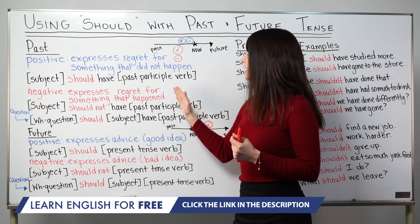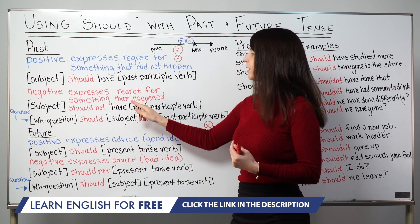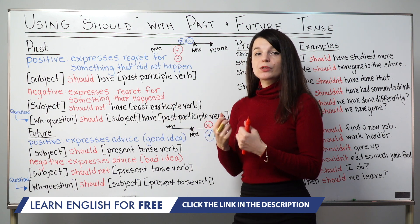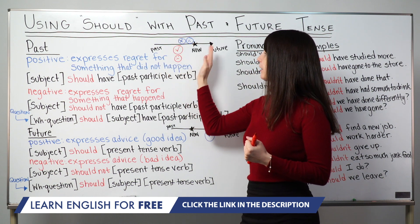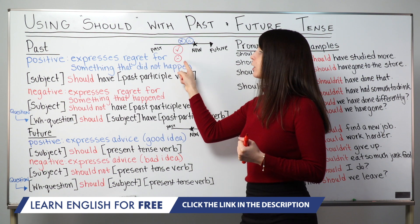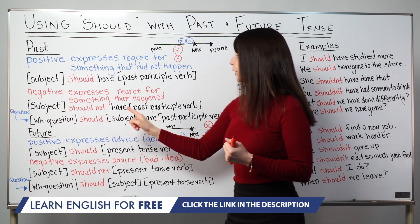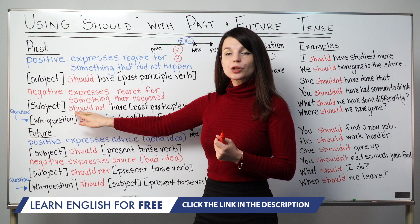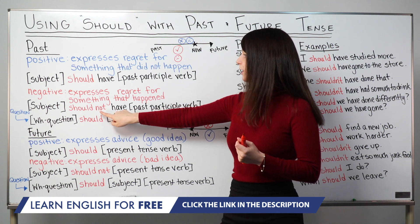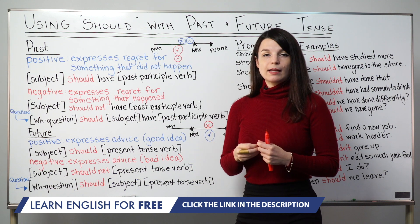Let's compare this to the negative form. When we make a negative statement using should in the past, it expresses regret for something that did happen. It's a negative sentence, but this action was real. Visually, in the past, something actually did happen — a true, real event — and we regret that thing. The pattern uses: subject plus should not, then have and the past participle verb. The only change from the positive is adding not.